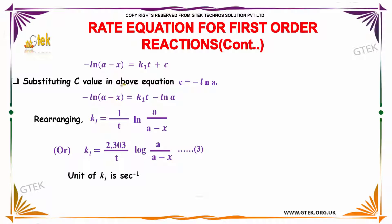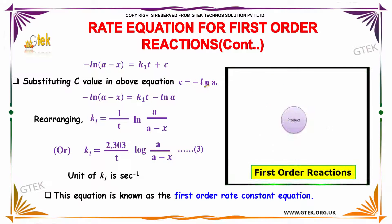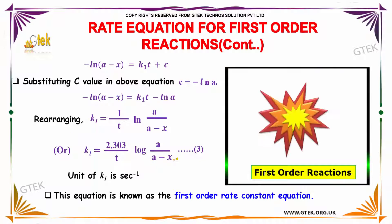Substituting the value of c in the above equation as -ln(a), K1 = (1/t)ln(a/(a-x)), or K1 = (2.303/t)log(a/(a-x)). The unit of K1 is per second. This equation is called the first-order rate constant equation.